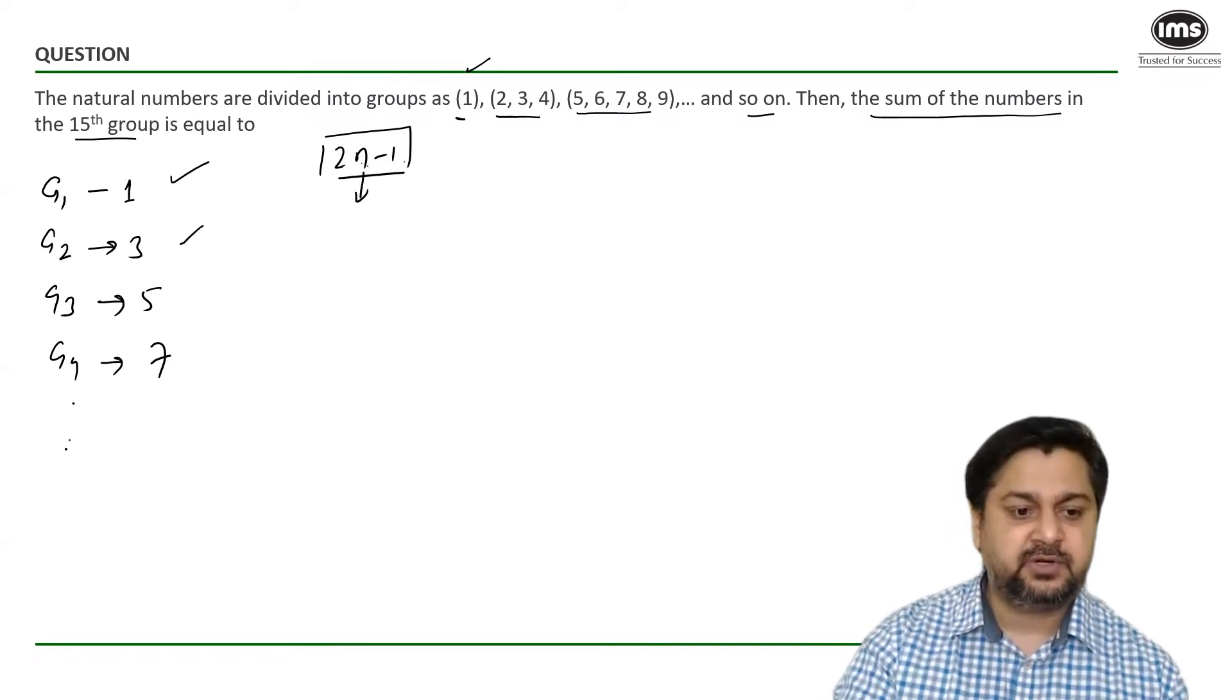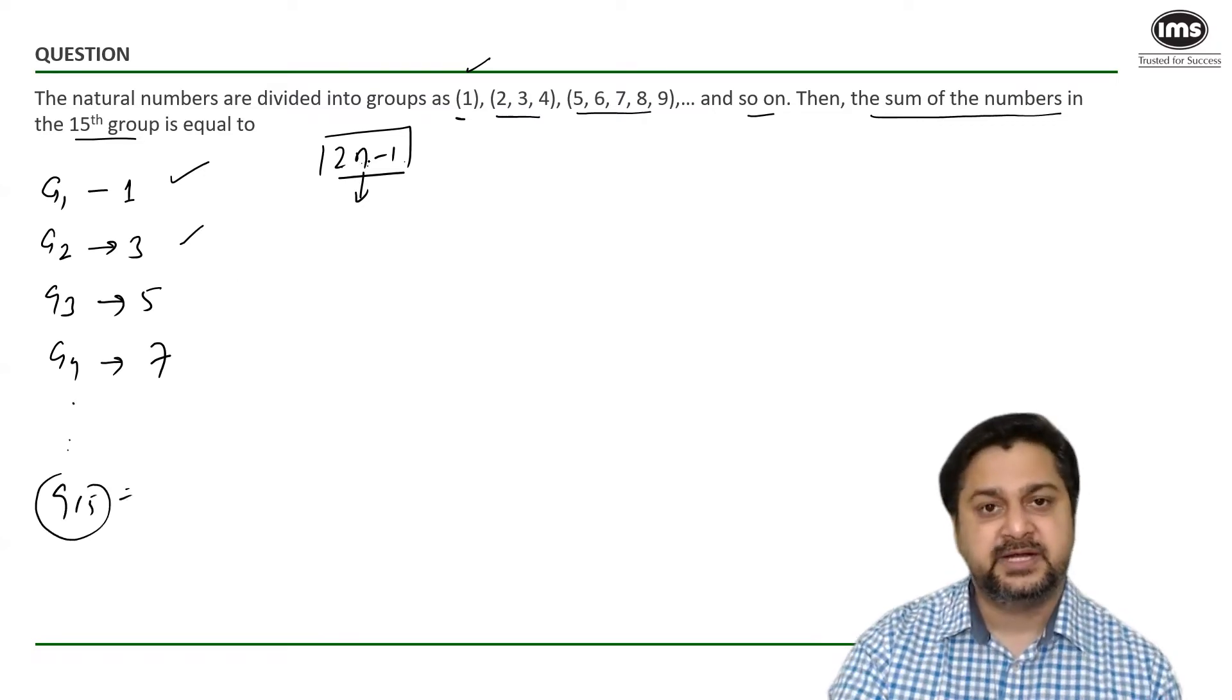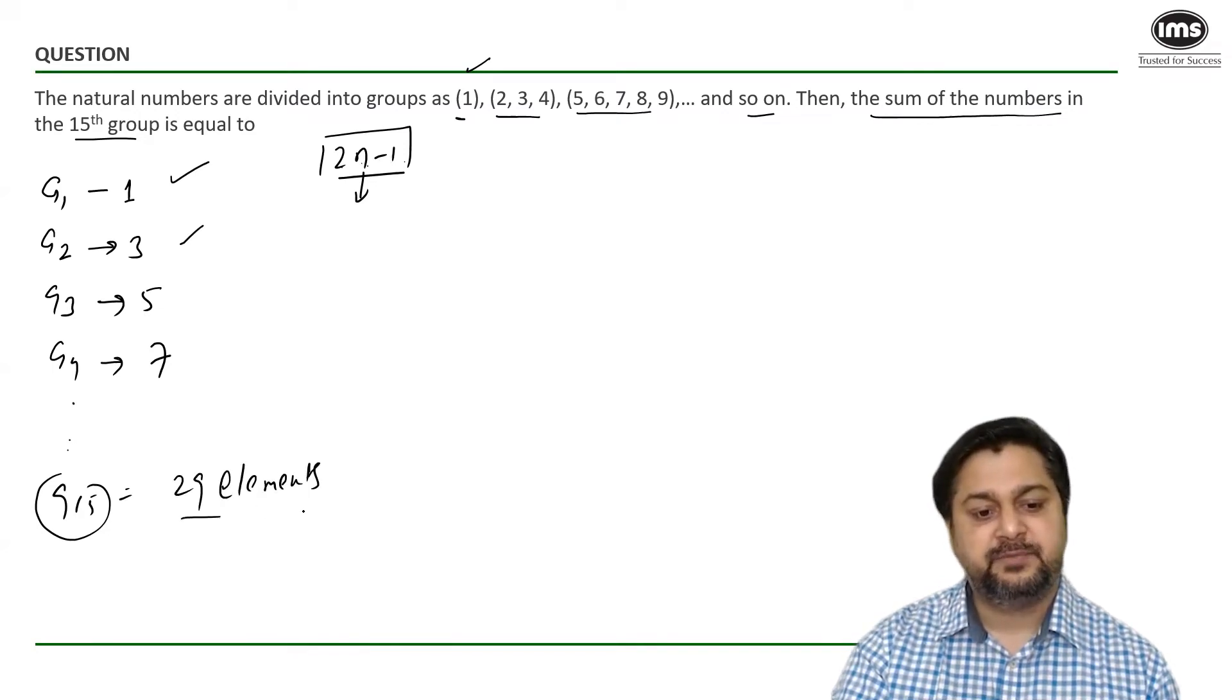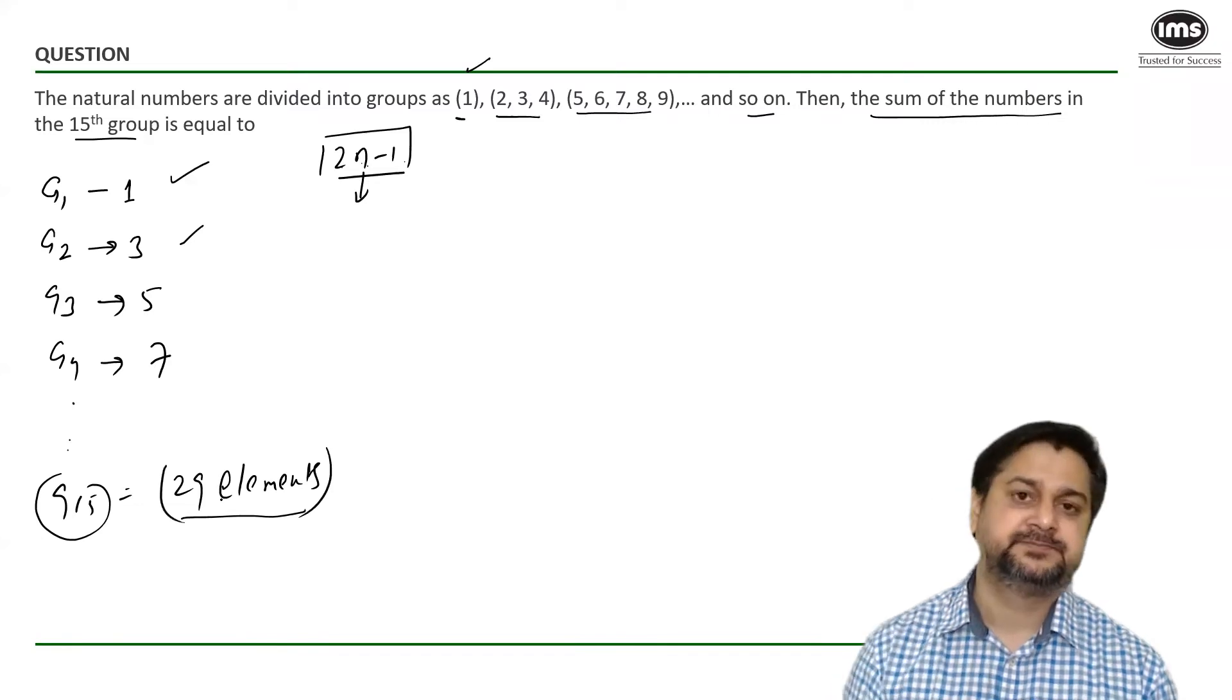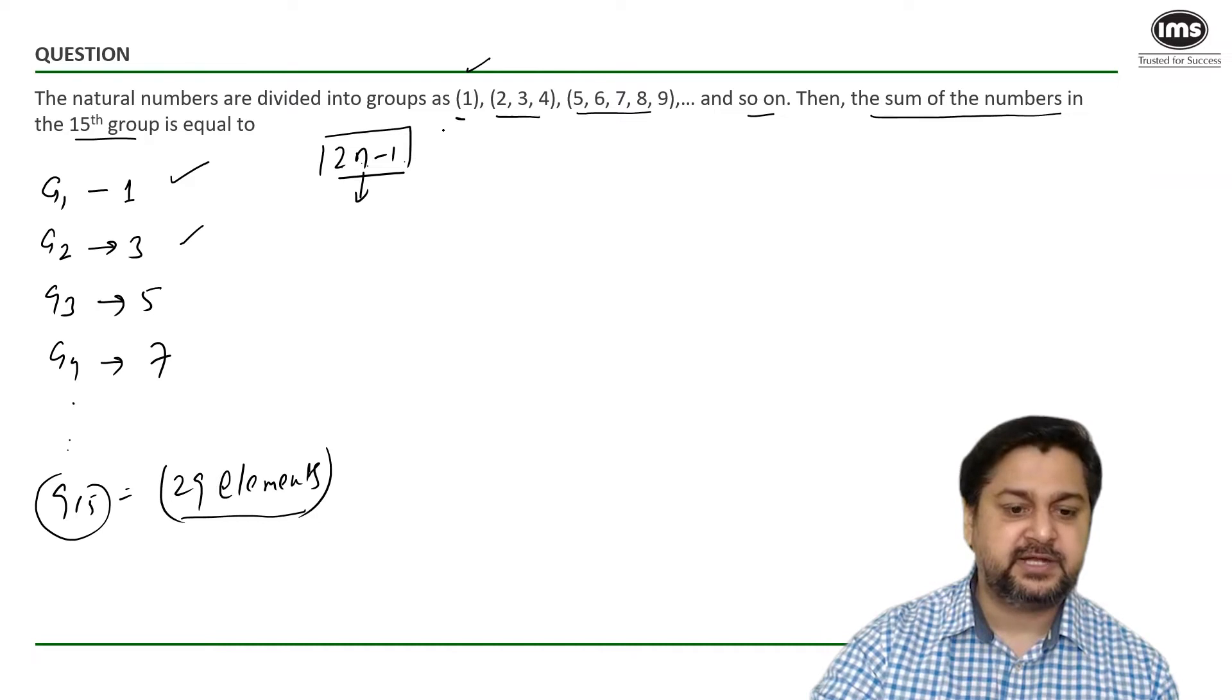So if you have to find out the total number of elements in group number 15, it would be 2 into 15, that's 30, 30 minus 1, 29 elements. So we know in group number 15 there would be 29 elements. I hope everybody is clear. In group number 15 there are 29 elements.